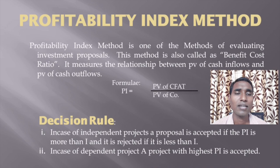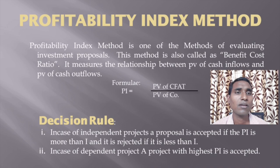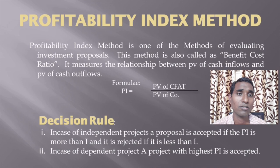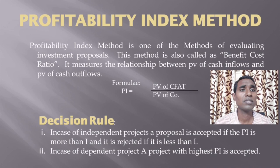This method is quite similar to net present value method. In NPV, we used to calculate the present value of cash inflows first, then present value of cash outflows, then find the net present value. In NPV we deduct these two items: present value of cash inflows minus present value of cash outflows. But the PI formula is PV of CFAT divided by PV of CO. In case of NPV you deduct both terms; in case of profitability index, you divide both terms. That is the only difference.